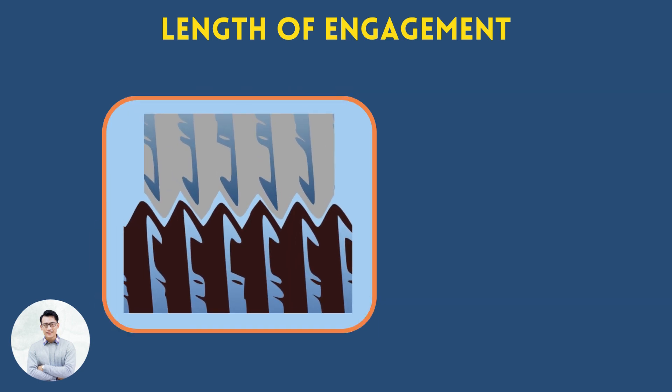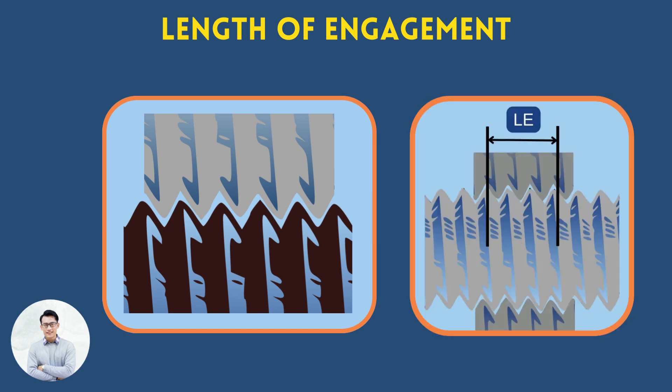The length of engagement is the axial distance of the full threads that are in contact in a thread assembly. It is usually measured in multiples of the pitch. For example, 5P means a length of engagement of 5 times the pitch.